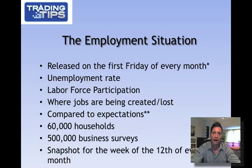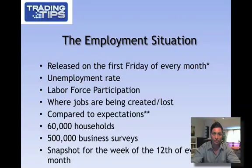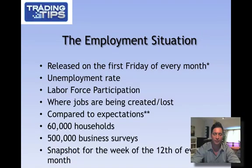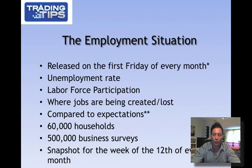The way the report is formed: the U.S. Census Bureau conducts a survey of 60,000 households every single month and hands that data over to the Department of Labor Statistics. Those 60,000 households represent the roughly 300 million people living in the United States. They also send out about 500,000 business surveys, done mostly online. An algorithm processes those surveys of both people and businesses to assess how the labor force and working force in America is performing. The snapshot of data you see every month is only for the week of the 12th of every month.